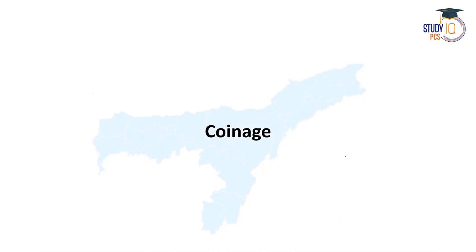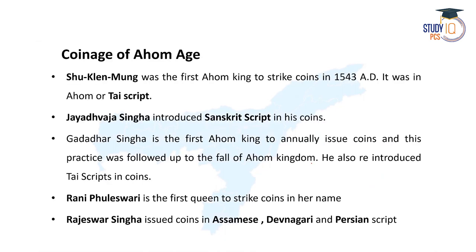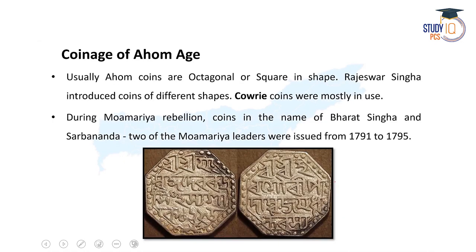Now let us discuss the coinage of ancient and medieval Assam. Regarding the Ahom age coinage, Suklaengmung was the first Ahom king to strike coins. He issued coins and this practice was followed up to the fall of the Ahom kingdom. He initiated this practice and also reintroduced the Ahom script in coins. Rani Phuleswari is the queen to strike coins in her name. Then Rajas Soringa issued coins and experimented — he issued coins in Assamese, Devanagari script, and also in Persian script. Ahom coins were usually octagonal or square in shape — a very important fact.